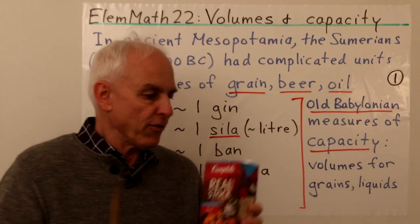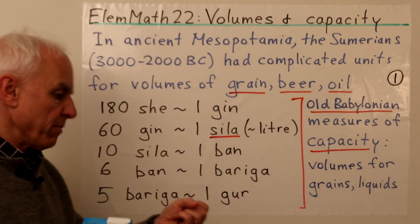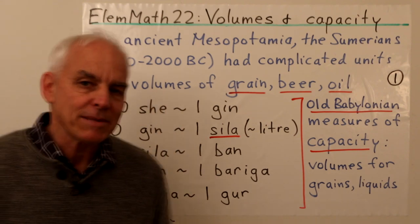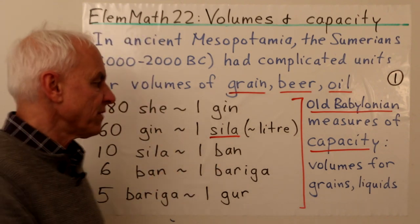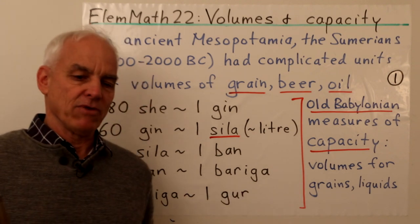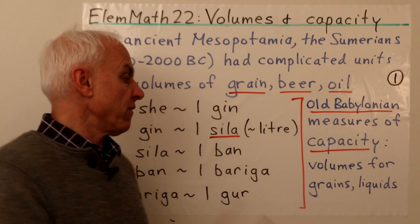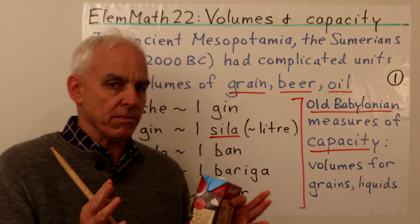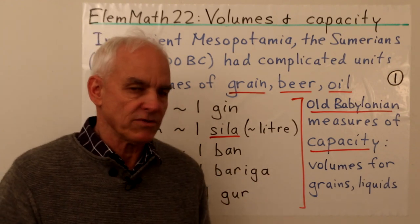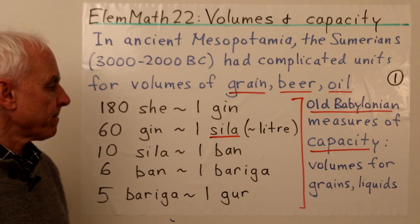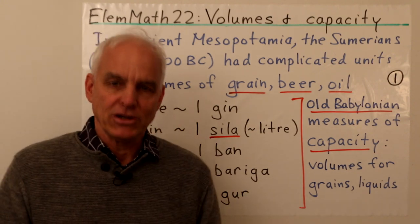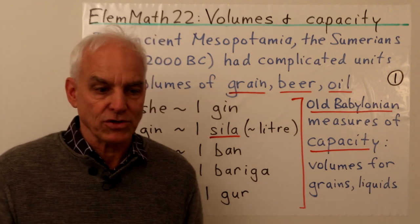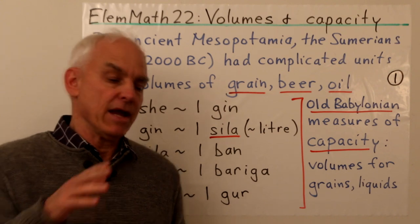While we sometimes use the word 'volume,' it can be more instructive to use the word 'capacity.' Capacity refers to volume in the context of grains or liquids, rather than say the volume of a box. This topic goes back to antiquity and is a very important and instructive one for young children to strengthen their arithmetical understanding and connect with the real world.